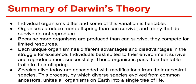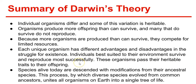Summary of Darwin's theory: Individual organisms differ, and some of this variation is heritable. Organisms produce more offspring than can survive, and many that do survive do not reproduce. Because more organisms are produced than can survive, they must compete for limited resources. Each unique organism has different advantages and disadvantages in the struggle for existence. Individuals best suited to their environment survive and reproduce most successfully, passing their heritable traits to their offspring through natural selection. Species alive today are descended with modification from their ancestral species, and this process — by which diverse species evolved from common ancestors — unites all organisms on Earth into a single tree of life.